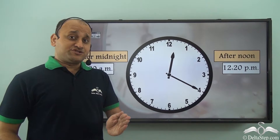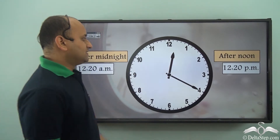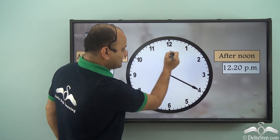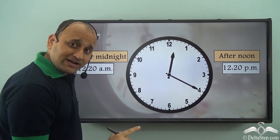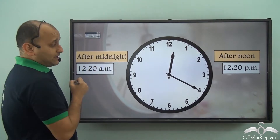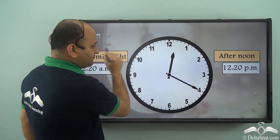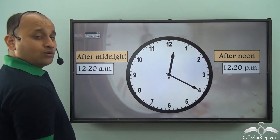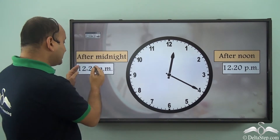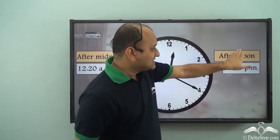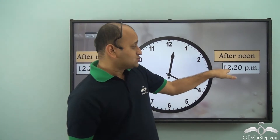Now another important thing to notice: the hour hand is pointing towards 12 and the minute hand is pointing to 4, so 5 times 4 is 20 minutes. So it's 12:20. If this falls after midnight — before noon — then it is 12:20 AM, because it is before noon. And if this time is in the afternoon, then we write it as 12:20 PM.